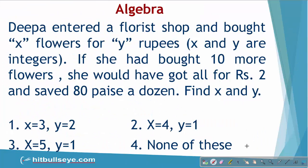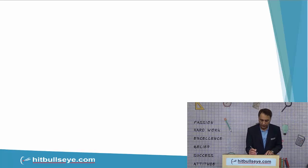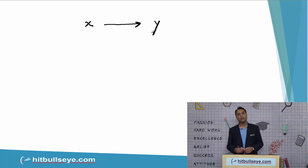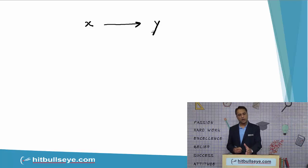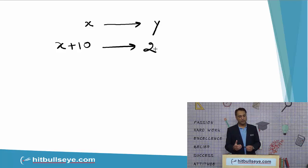We've taken a question here to understand this challenge. Deepa entered a florist shop and bought x flowers for y rupees, where x and y are integers. If she had bought 10 more flowers, she would have got all the flowers for 2 rupees and saved 80 paise a dozen. Find x and y. The starting point is: on one side we have x flowers, on the other side we have y rupees — so x flowers are bought for y rupees — and x plus 10 flowers are bought for 2 rupees.